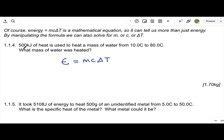They tell us here 500 kilojoules of heat is used to heat a mass of water from 10 to 80 degrees. What mass of water was heated? So we're trying to find the m and there are two ways you can set this up.